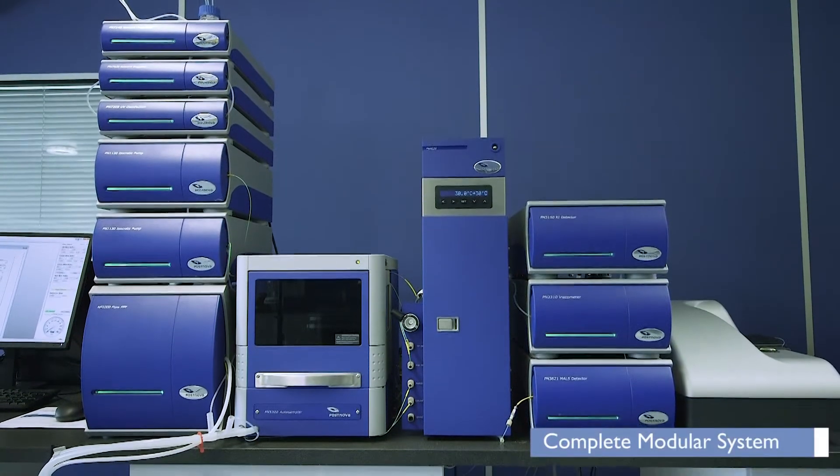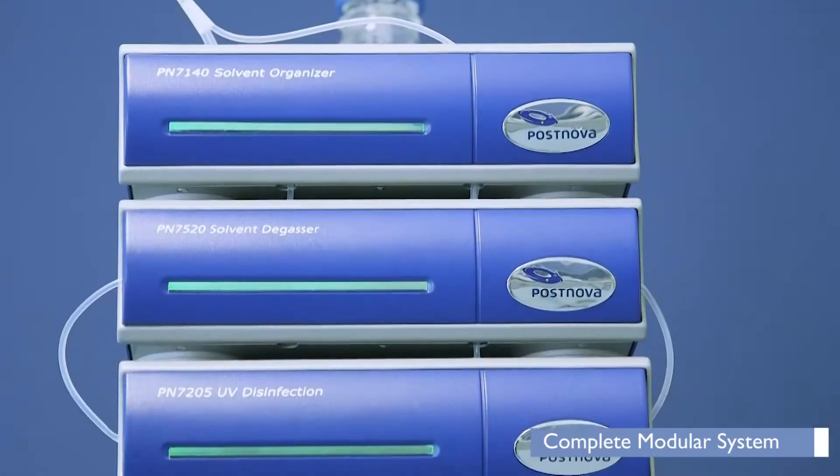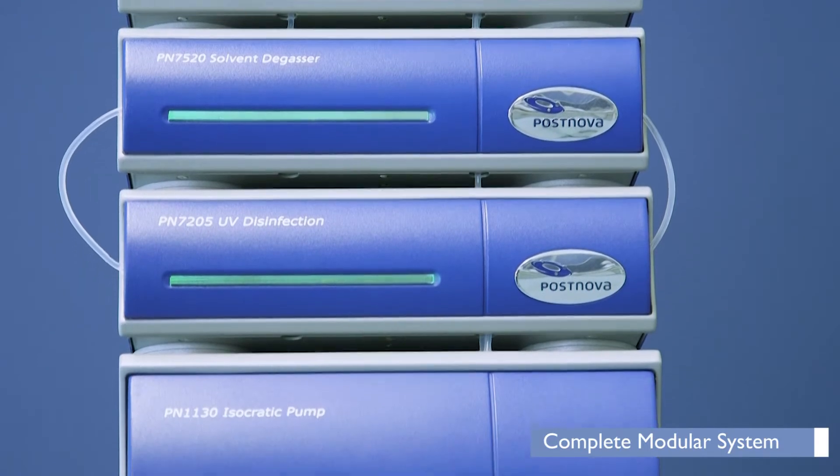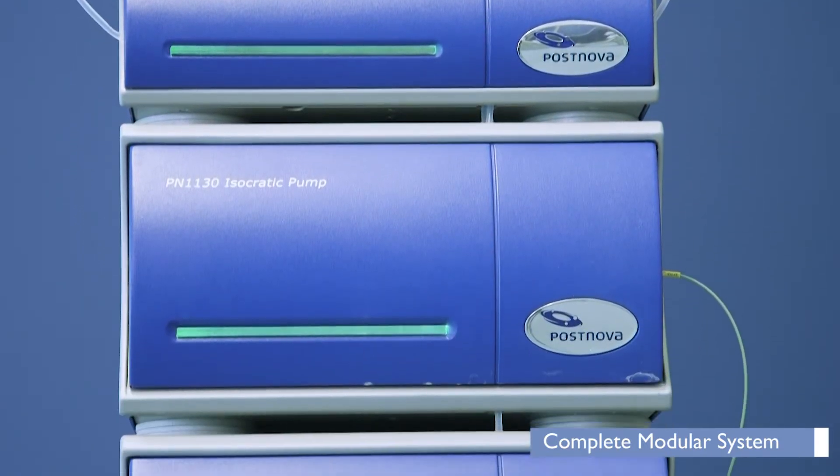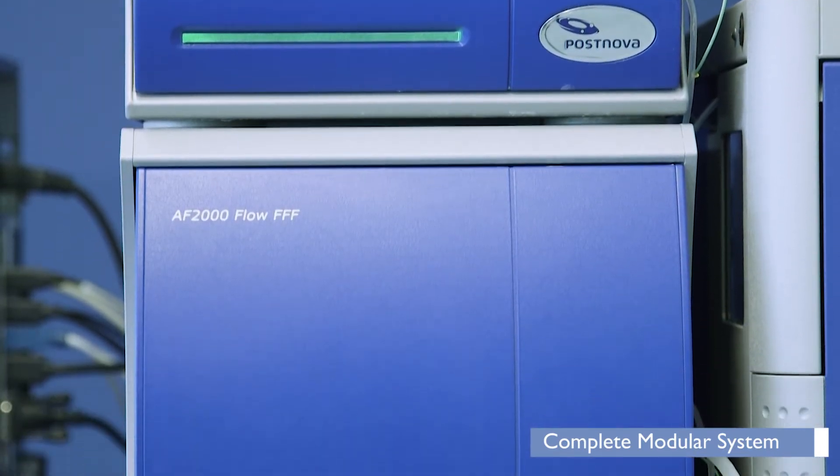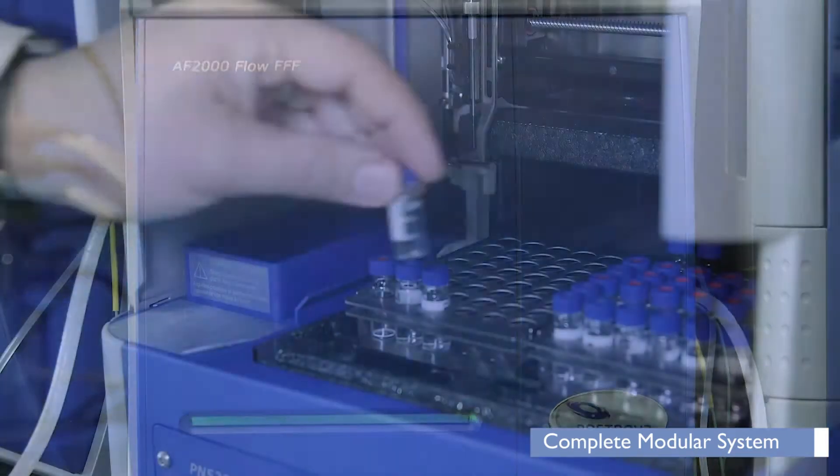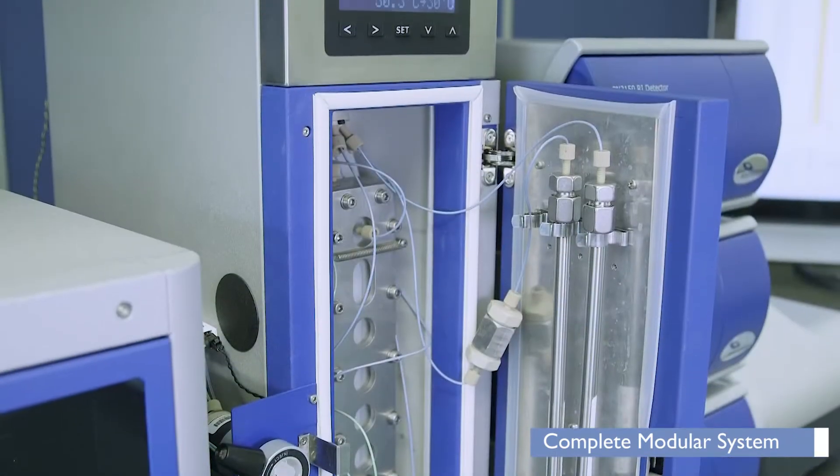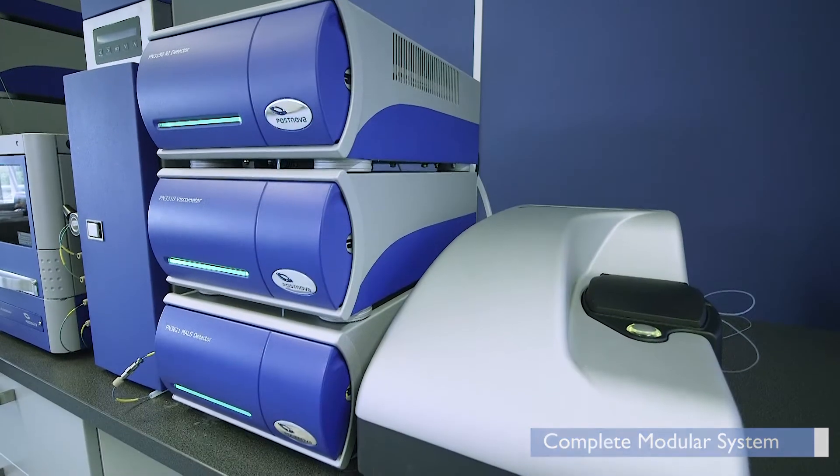The complete AF2000 system comprises a solvent organizer, solvent degasser, UV disinfection module and then the eluent pump, focus pump and the AF2000 cross-flow controller, auto sampler, channel thermostat and detectors.